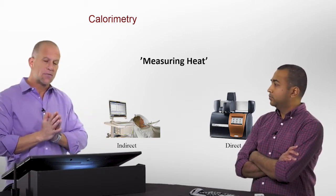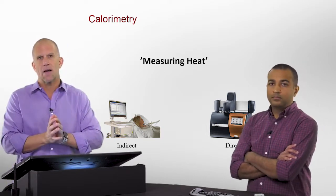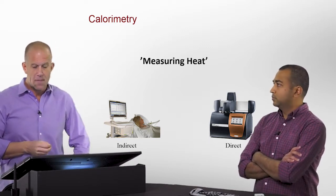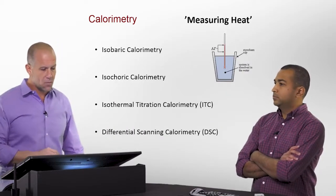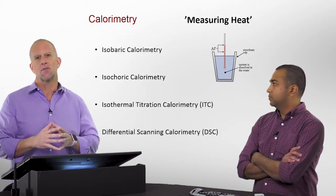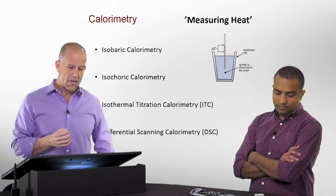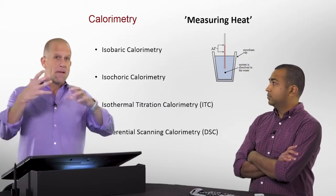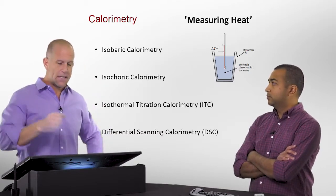Calorimetry can split up into indirect calorimetric things. Metabolism can be followed by how you inhale oxygen versus exhale CO2, and it can be assumed how much heat is evolved by knowing the metabolic or chemical processes going on. But we're not really talking about that today. What we're going to talk about is direct calorimetric measurement — the direct measure of heat in a system through calorimeters.